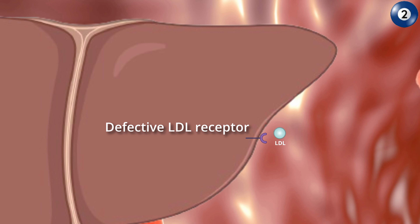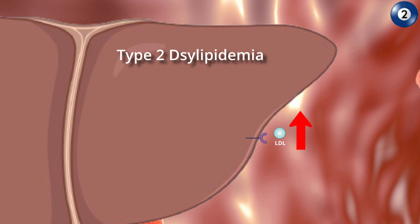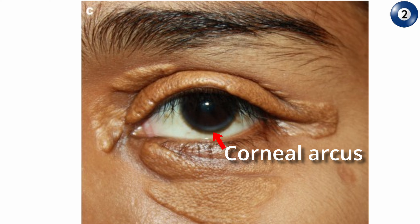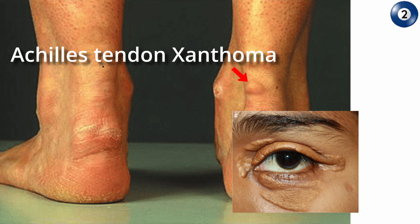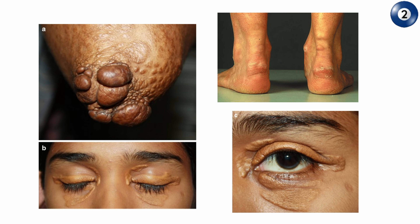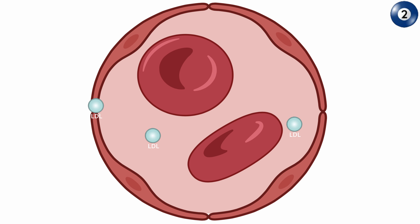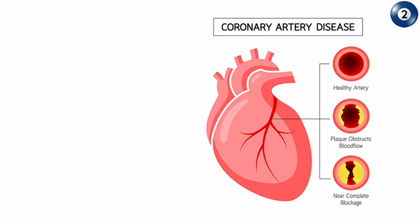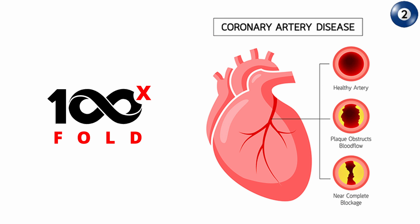A defective LDL receptor leads to high LDL in the blood, resulting in type 2 dyslipidemia, or hypercholesterolemia. Corneal arcus and xanthomas are also seen in this condition. Xanthomas develop because of lipid leakage from the vasculature into the surrounding tissue, where macrophages subsequently phagocytose them, forming foam cells.